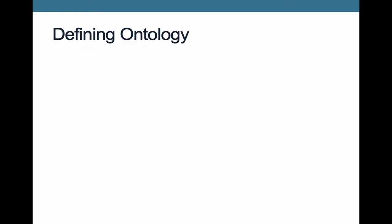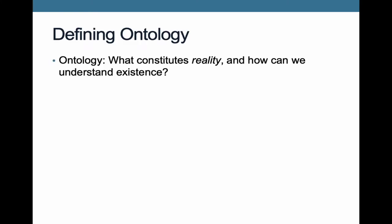First, ontology. Ontology asks the question: what is reality? What constitutes reality, and how can we understand what existence is? This gets at the underlying nature of the world. Different disciplines have different understandings of ontology — of how fundamentally ordered and patterned the world is.